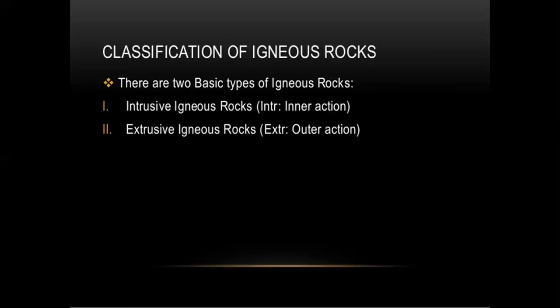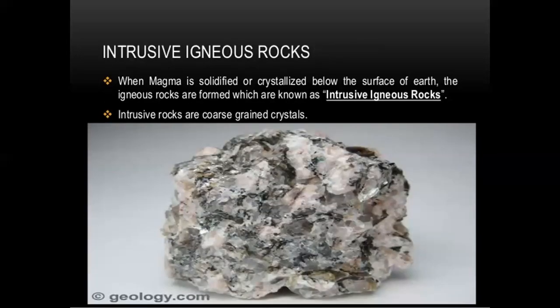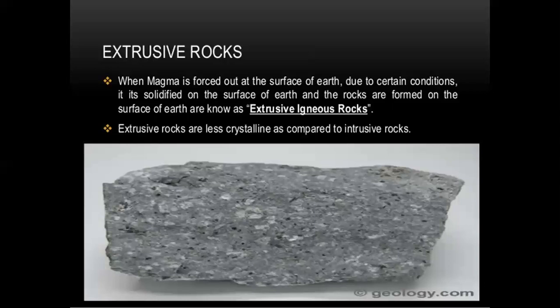Classification of igneous rocks: there are two types — intrusive igneous rocks and extrusive igneous rocks. Intrusive means inner action; extrusive means outer action. Intrusive igneous rocks: when magma is solidified or crystallized below the surface of the earth, igneous rocks are formed. Intrusive rocks are coarse-grained crystals. Extrusive rocks: when magma is forced out of the surface of the earth due to certain conditions, it solidifies on the surface of the earth. Rocks formed on the surface are known as extrusive igneous rocks. Extrusive rocks are less crystalline compared to intrusive.